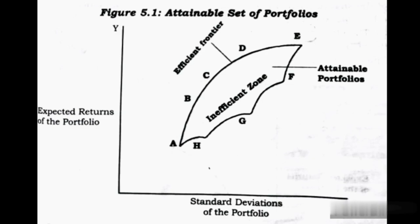From the graph, portfolios C and F have the same expected return, but portfolio C is more efficient than portfolio F because C has a lower risk than F. Similarly, portfolios D and G have the same risk or standard deviation, but D is the efficient portfolio because D has a higher expected return than G.